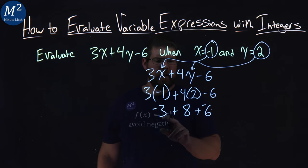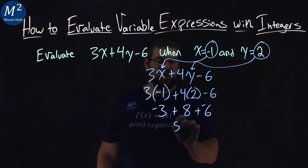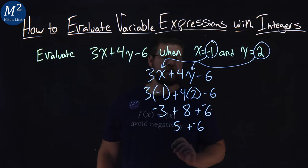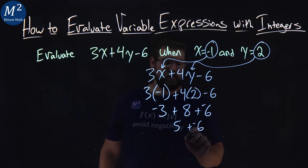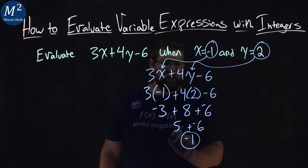So we go left to right. Negative 3 plus 8 gives me a positive 5 plus negative 6 here. And 5 plus negative 6 is just negative 1. It's like 5 minus 6, right? Negative 1 right there.